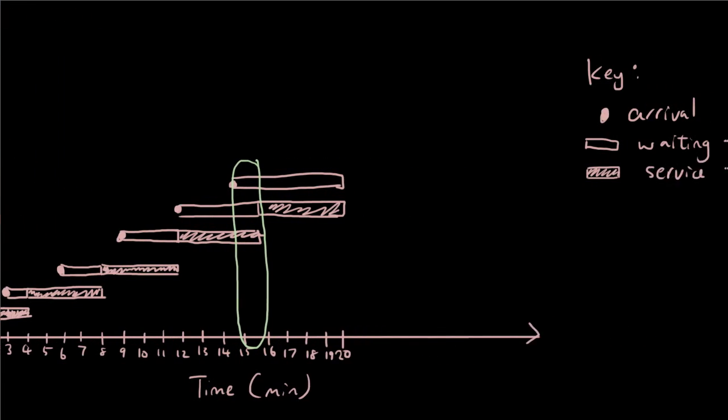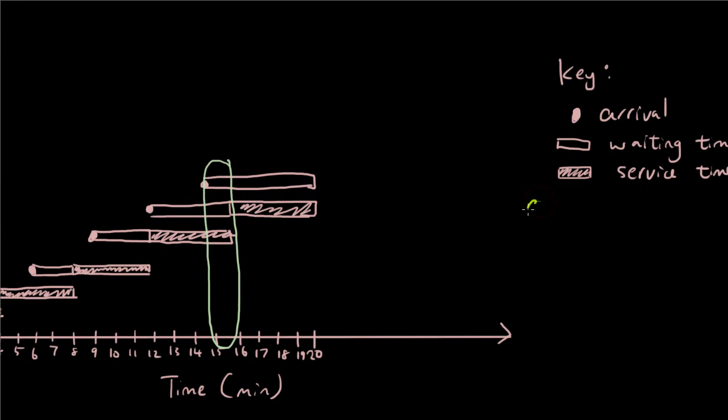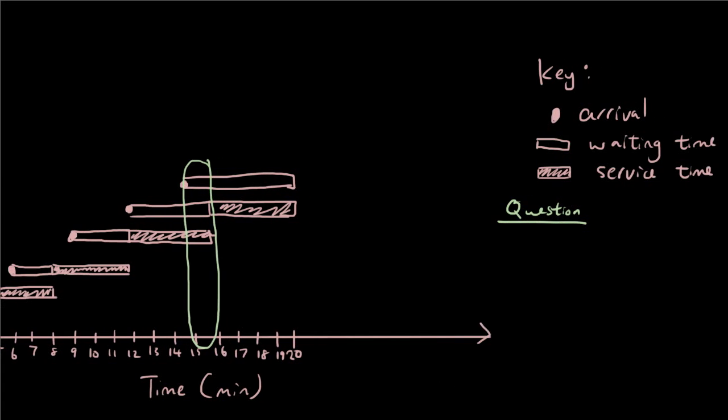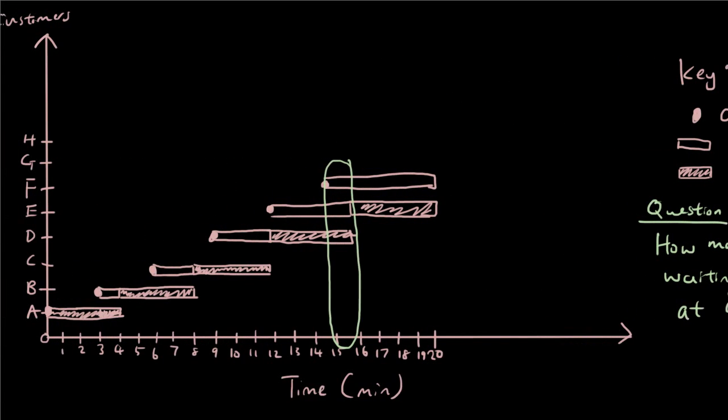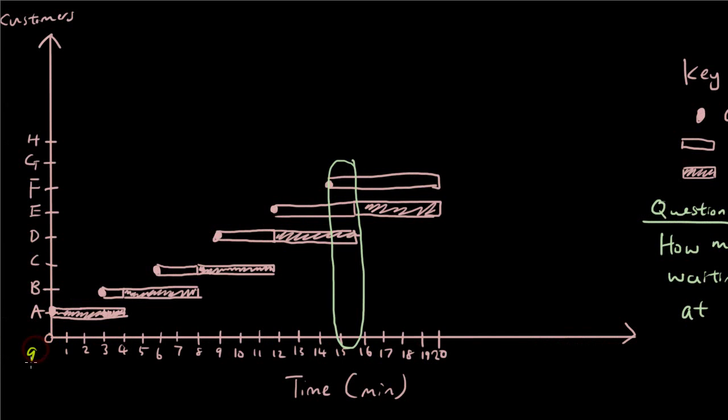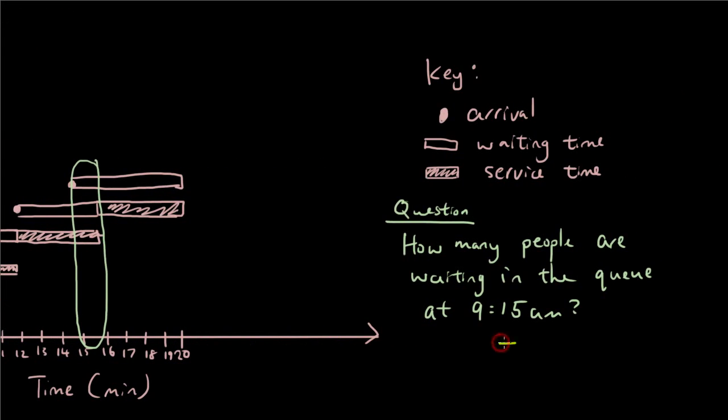So the question could be something like: How many people are waiting in the queue at 9:15? This, if you guys remember, is 9 a.m. at the start. So at 9:15, there was customer E and F were both waiting in the queue. E and F. Two people. Two people waiting in the queue.